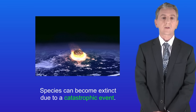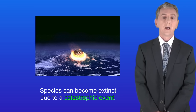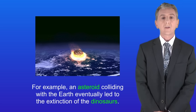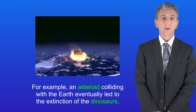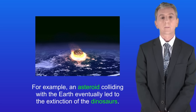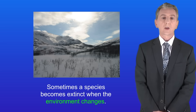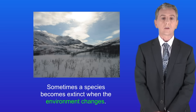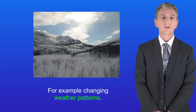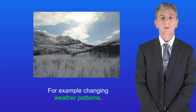Firstly, species can become extinct due to a catastrophic event. For example, an asteroid colliding with the earth eventually led to the extinction of the dinosaurs. Sometimes a species becomes extinct when the environment changes — for example, changing weather patterns.